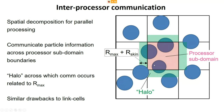In LAMMPS there is a similar issue with inter-processor communication. LAMMPS parallelization is done through spatial decomposition — each processor handles calculations within its subdomain. To do this accurately, information must be passed across subdomain boundaries at every time step. This is done by creating a halo region. The halo width is based on the maximum particle radius, and any particle falling within it must have its information passed to the neighboring subdomain. Because the halo size is based on the largest particle radius, it can be filled with huge numbers of small particles.